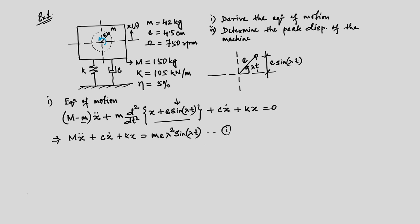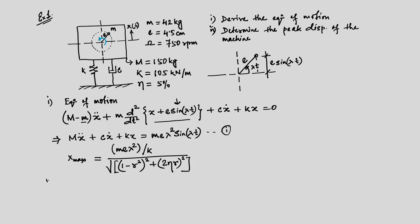We have already solved this form. The maximum amplitude x_max equals m·e·λ² divided by the stiffness k, all divided by the square root of (1 − r²)² plus (2ηr)². This expression gives the peak displacement, and we need to evaluate the individual parameters.